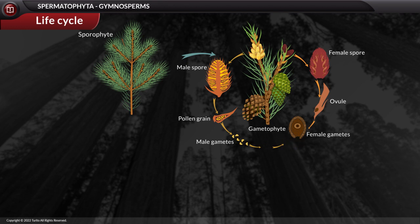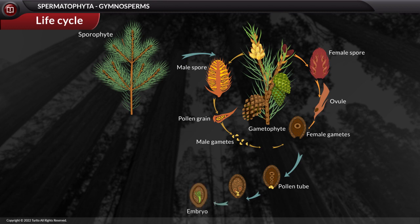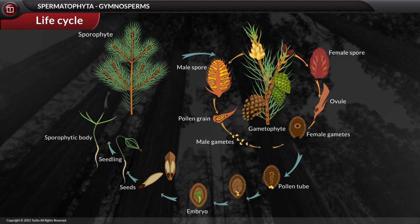Once the pollen grain lands on the ovule, it germinates and forms a pollen tube, which carries the male gametes into the ovule to reach the female gamete. The male gamete fertilizes the female gamete to form a zygote. Post-fertilization, the zygote develops into an embryo and the ovule develops into seeds. The seeds then germinate to form a new sporophytic body, completing the alternation of generations in gymnosperms.